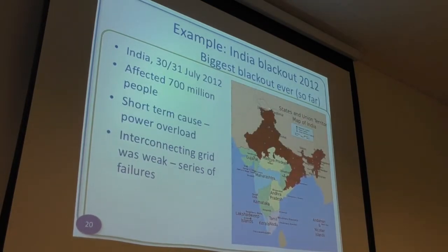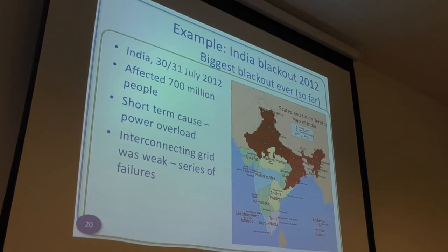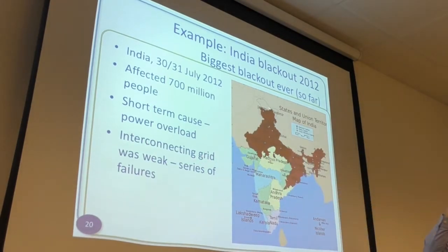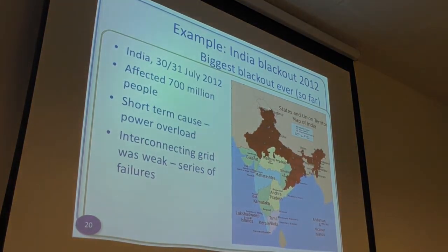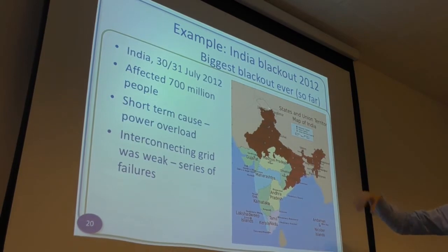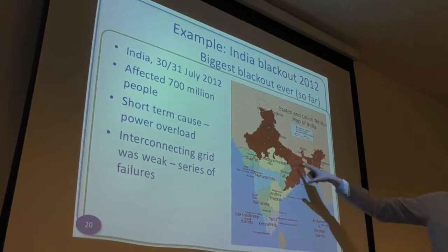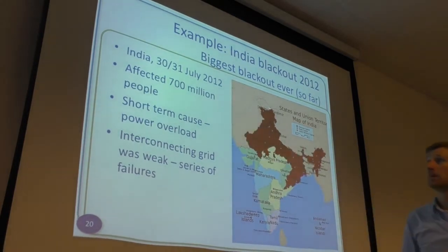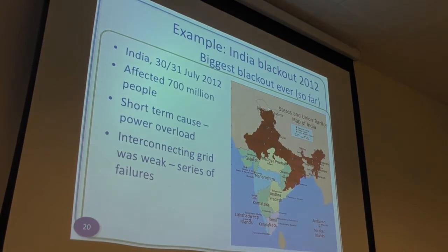And finally, the biggest blackout ever — at least until 2012 — which happened in India. The short-term cause was a power overload somewhere, but because there was insufficient protection it cascaded into a series of failures taking down a lot of the power grid. It affected 700 million people.